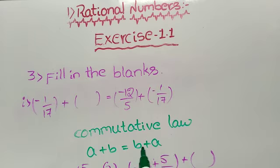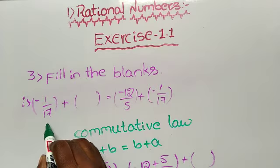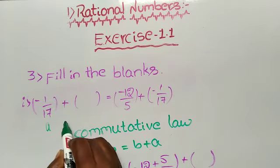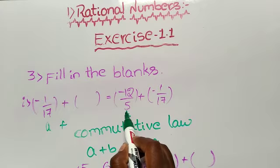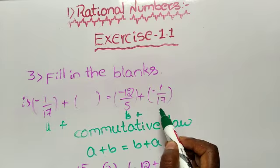What is the commutative law formula? a + b = b + a. Here we have to take -1/17 equals to a, and -12/5 equals to b, plus -1/17 equals to a.